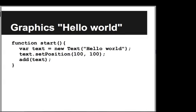Looking back at the code we were just exploring: we make a new Text object with the contents 'hello world'. Next we tell the text what position to go to, and finally add it to the screen.